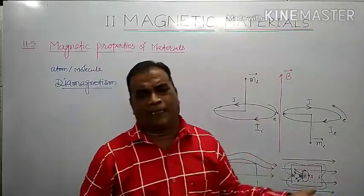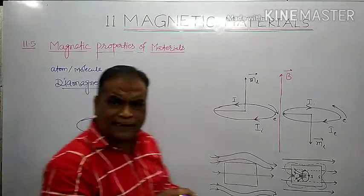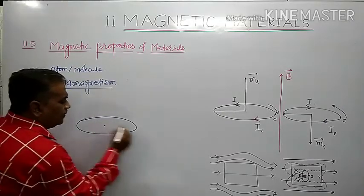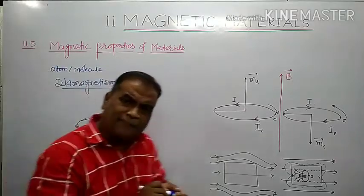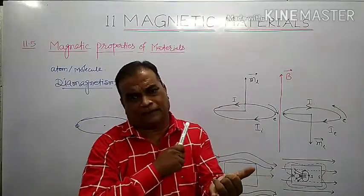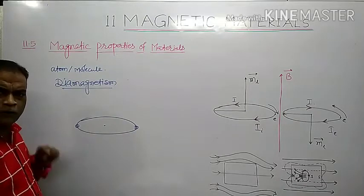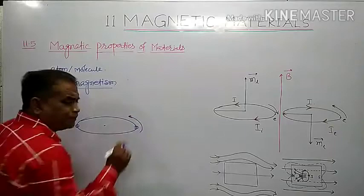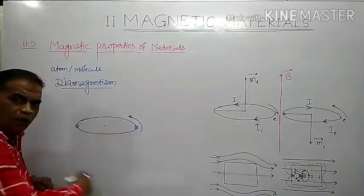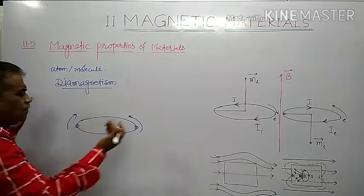Now, how can we explain that when a diamagnetic material is kept in an external magnetic field, it gets magnetized in a direction opposite to the externally applied magnetic field? Consider an atom of diamagnetic material having two electrons in a pair in the outermost orbit. In the absence of an external magnetic field, one electron revolves in an anticlockwise direction while the second revolves in the clockwise direction.